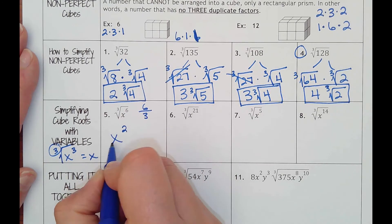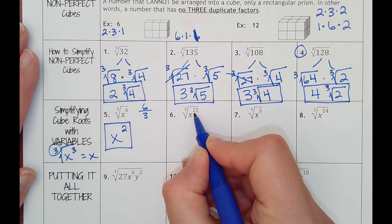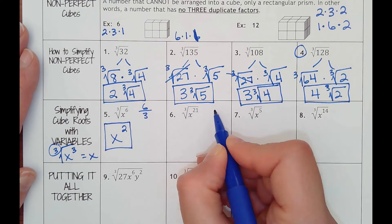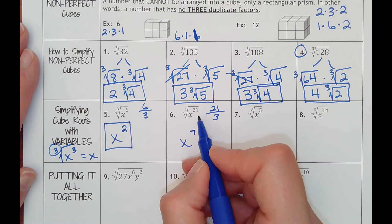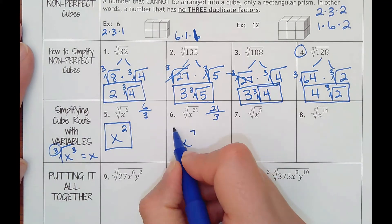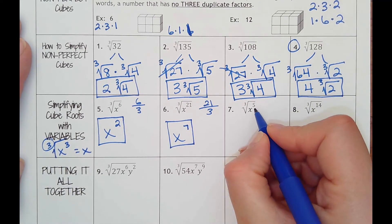So on this one, since it's six, all I have to do is take six divided by the index of three, which would make x squared. So it's nice when they're multiples of three. Number six, since I have x to the 21st power, 21 does divide by three as well and that would be x to the seventh.